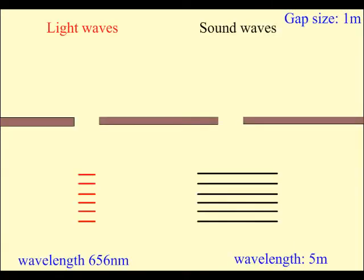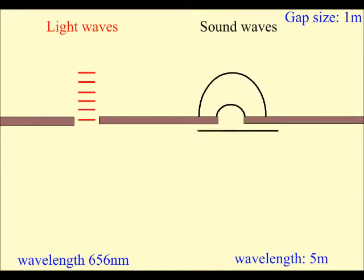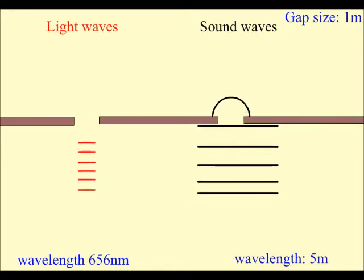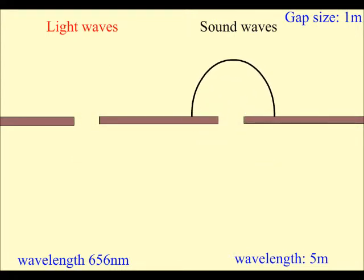This is the reason why we can hear around corners but not see around them. When the wavelengths of the waves are smaller than the gap, no diffraction occurs. Light has such a small wavelength compared to the gap that it doesn't need to bend to get through. Therefore, no diffraction occurs.